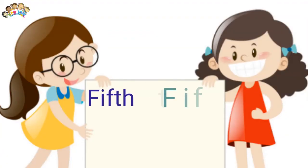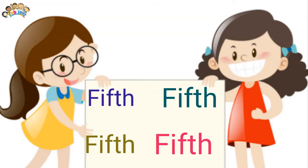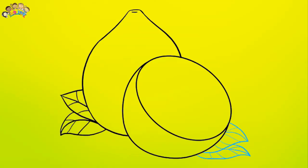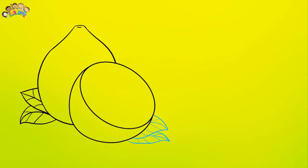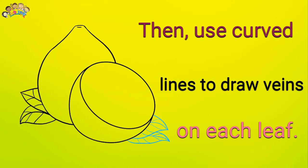Fifth, draw two leaves extending from beneath the lemons on the opposite side. Use two pairs of lines, allowing each to meet in a point. Let one line extend from the other leaf, giving the appearance of overlapping. Then, use curved lines to draw veins on each leaf.